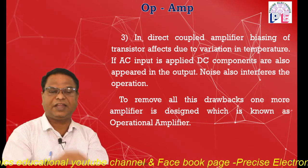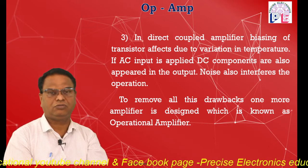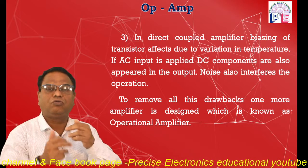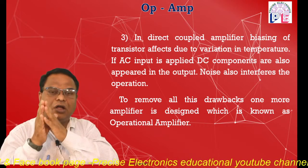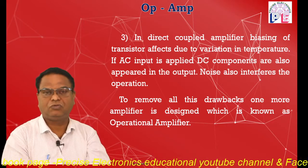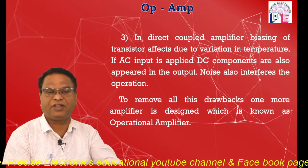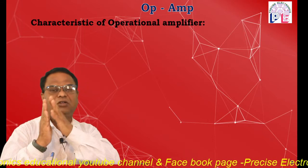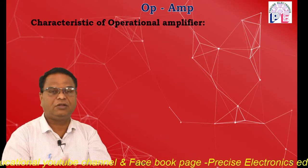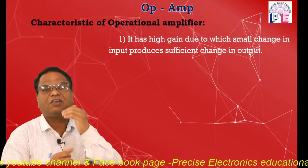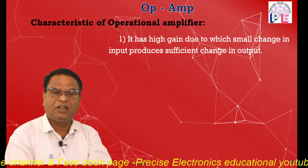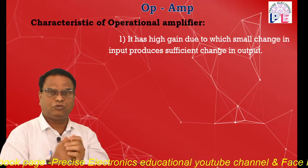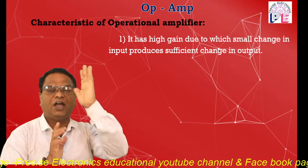To remove all these drawbacks, one more amplifier is available: the operational amplifier. The operational amplifier must almost fulfill the characteristics of the ideal or perfect amplifier. In case of ordinary amplifiers, gain is not sufficient, but in the case of the operational amplifier it has very high — almost infinite — gain, due to which a small change in input produces a sufficient change in output. The first characteristic is high gain.